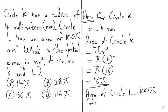Now total area we just need to add it. 16π plus 100π, so it will be 116π. So 116π, option D will be our answer.